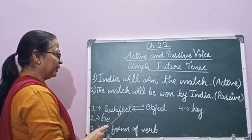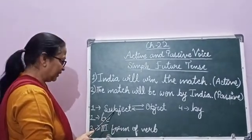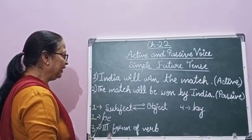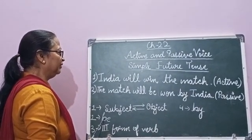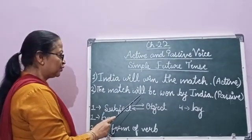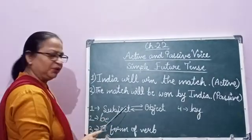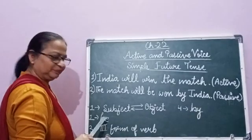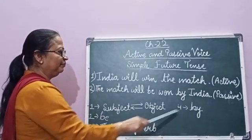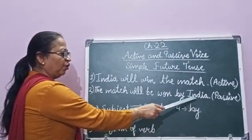The subject becomes object and the object becomes subject. We use 'be' — as you know, in future tense we use will or shall, so after will or shall we use 'be'. Always use the third form of the verb and 'by' before the object.